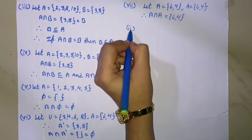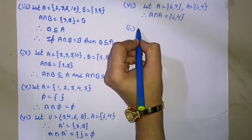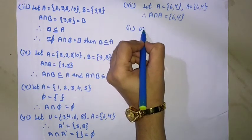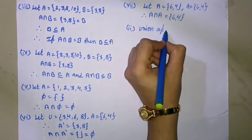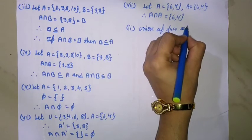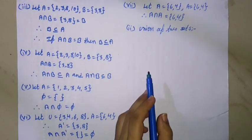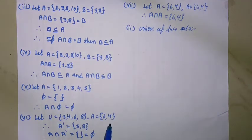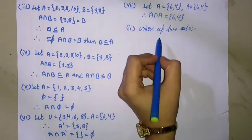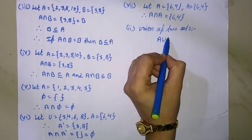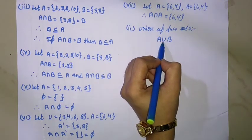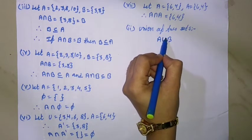Second operation on sets: union of two sets. If A and B are two sets, then a set containing all the elements of set A and B together is called the union of set A and B. It is denoted by A union B, using the symbol ∪.